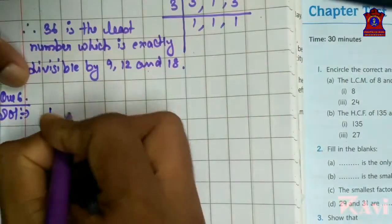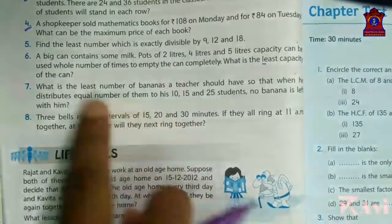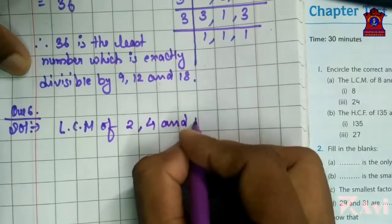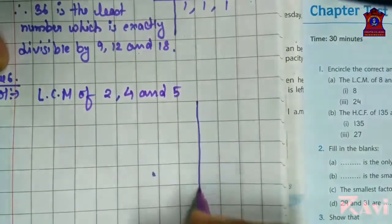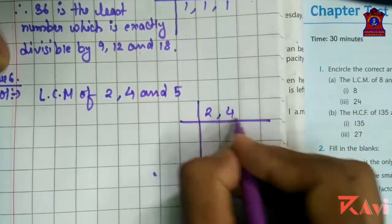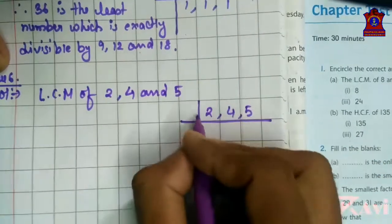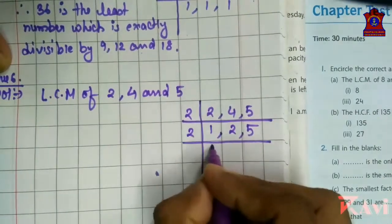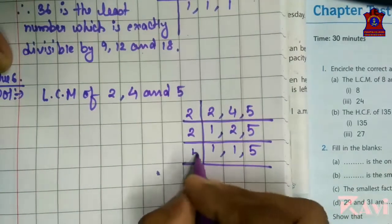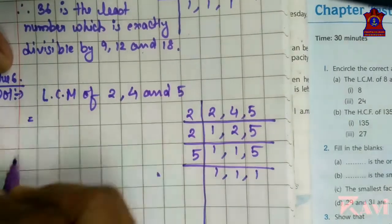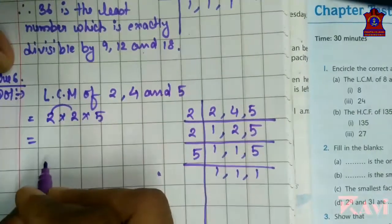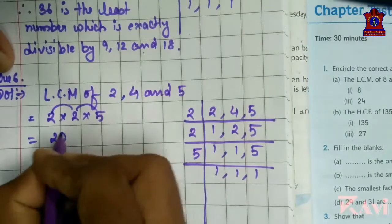So again, we are going to start here with LCM. LCM of 2, 4 and 5. Again, do the same process. Find out LCM of these numbers using division method. 2 ones are 2, 2 twos are 4. 5 is not divisible by 2. So again, 2. 2 ones are 2. 5 is not divisible. Now 5. So what are the prime factors? 2, 2 and 5. Multiply. 2 twos are 4, 4 fives are 20.